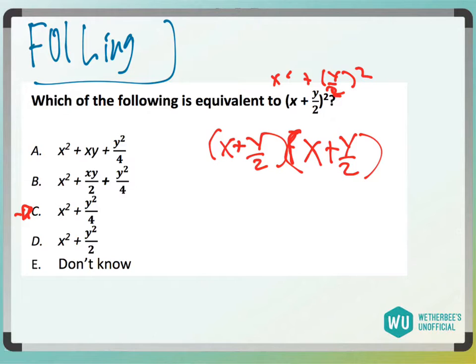You're going to have these middle terms, the outers and the inners. So immediately you can get rid of C and D. Now to foil it,